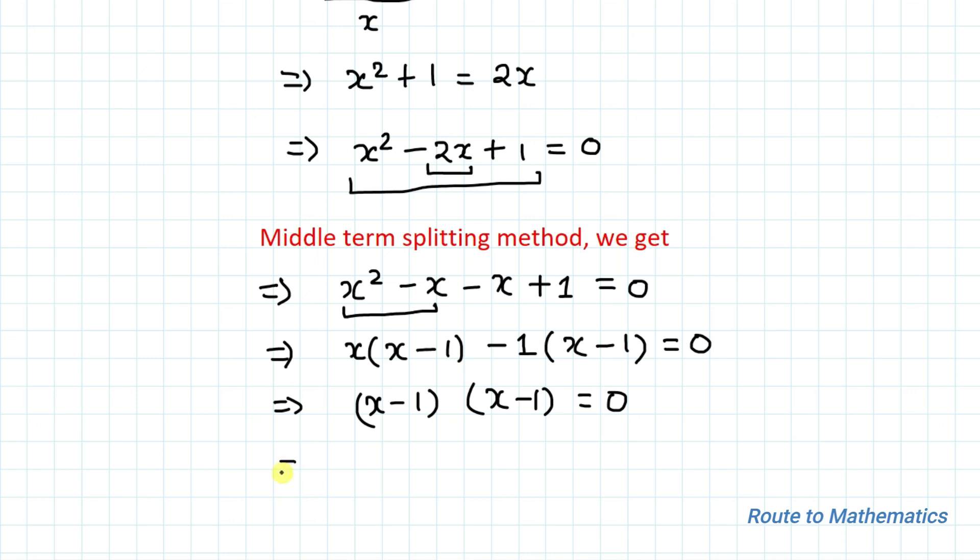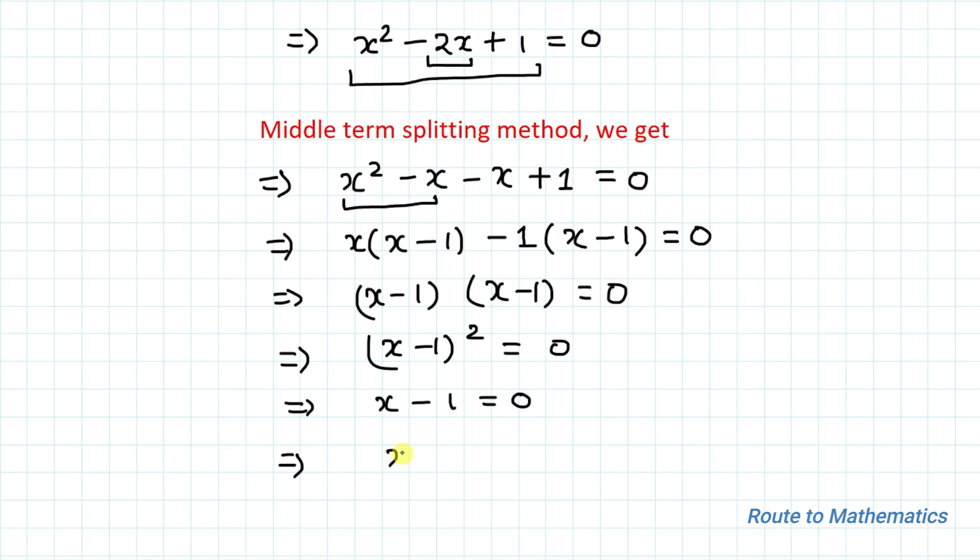Taking x minus 1 common, we get x minus 1 whole square equals 0. Taking the square to the right hand side, x minus 1 equals 0, so x equals 1.